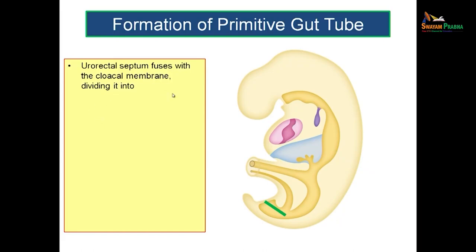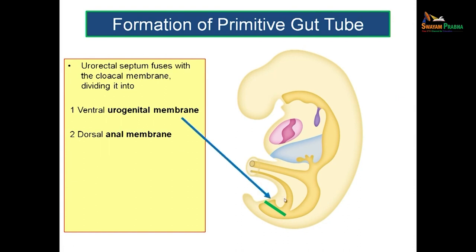The urorectal septum fuses with the cloacal membrane as it comes down, so that the cloacal membrane is divided into two parts: ventrally the urogenital membrane and dorsally the anal membrane. These two membranes will be getting perforated in order to make communication with the exterior in future — the anal orifice and the urogenital orifices will be formed by the perforation of the urogenital membrane and the anal membrane.